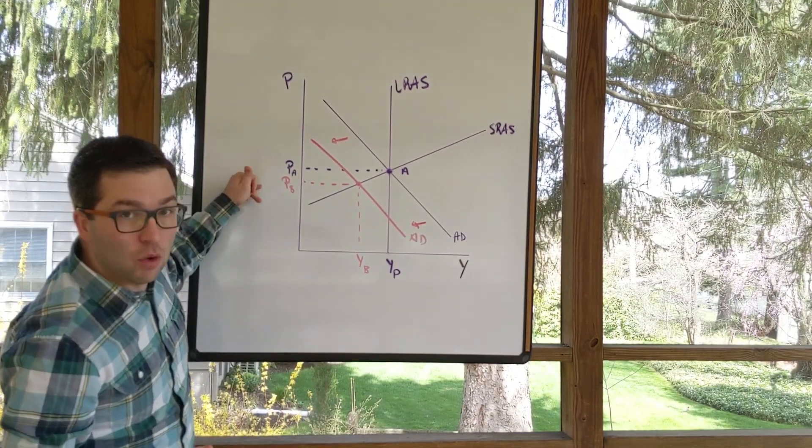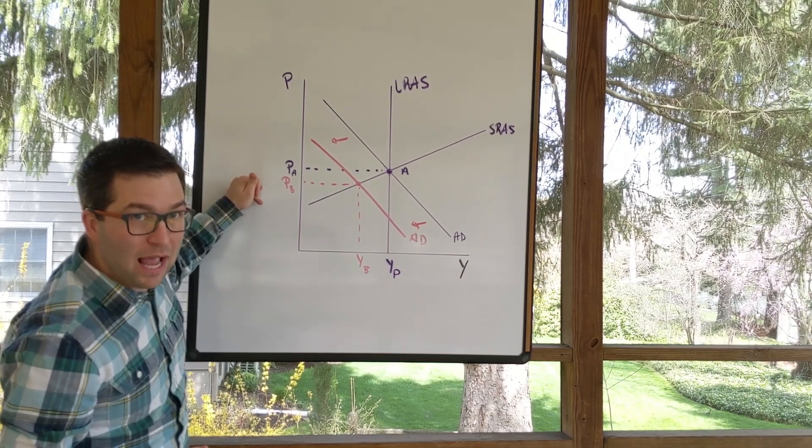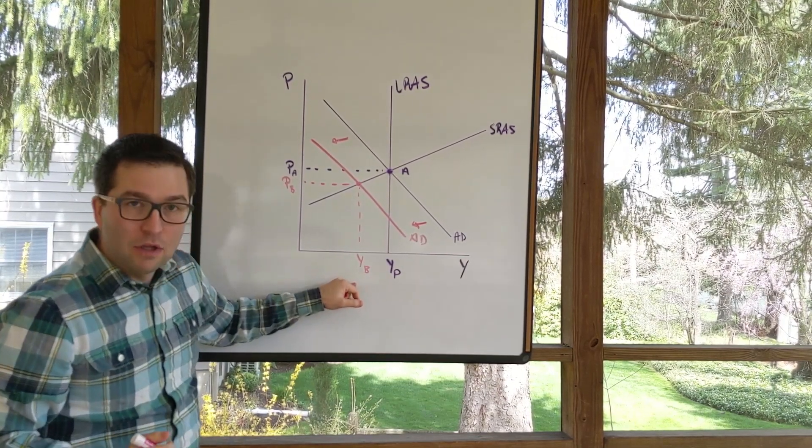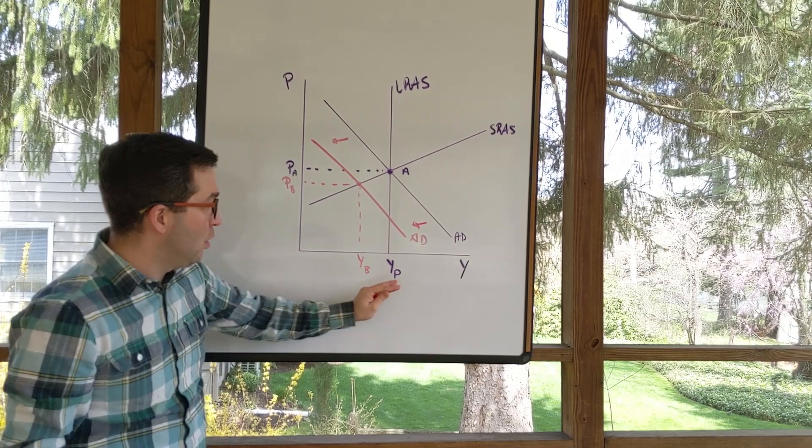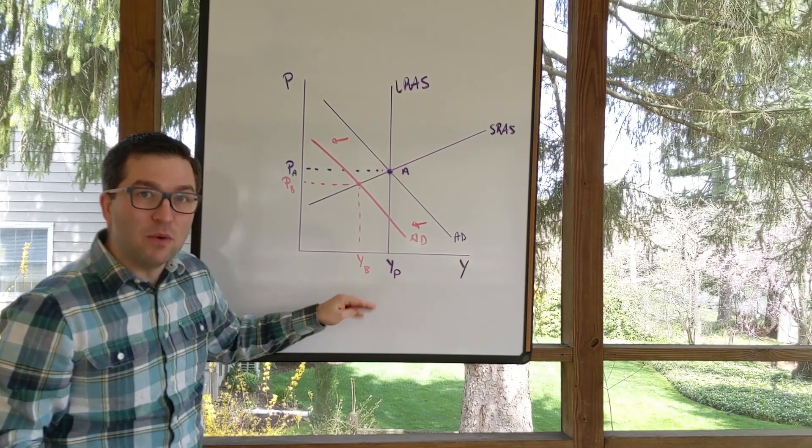Notice we have lower prices here on the y-axis and we have lower GDP. We're lower than the potential GDP, meaning we're in a recession.